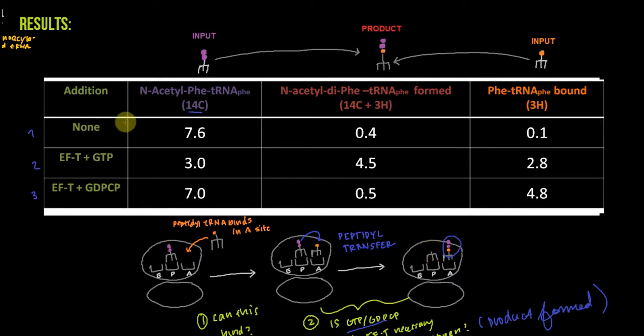Row one: we have not added EF-T or GTP or GDPCP, and we're asking what binds. First, the peptidyl-tRNA (the one charged with the dipeptide analog) binds, but Phe-tRNA does not seem to bind. The second thing we note is that no product is formed, and this is no surprise because we're missing the binding of one of the reactants, this Phe-tRNA-Phe. This can bind without EF-T and GTP.